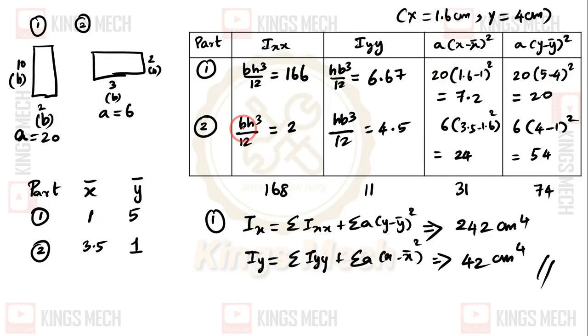Second section, this is bh³ by 12. b is 3, h is 2, so 3 into 2³ divided by 12 and 2 into 3³ divided by 12, which is 4.5. Area times x minus x̄, so x̄ is 3.5 minus x̄ is 1.6, that squared. Then y minus ȳ is 1 minus 4, that is minus 3 squared is positive 9. 9 times 6 is 54.